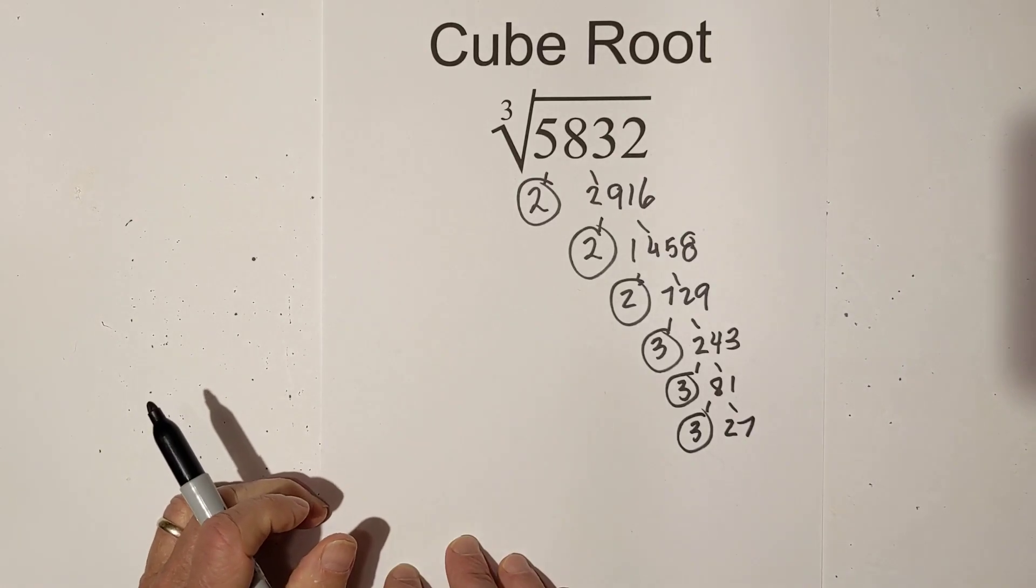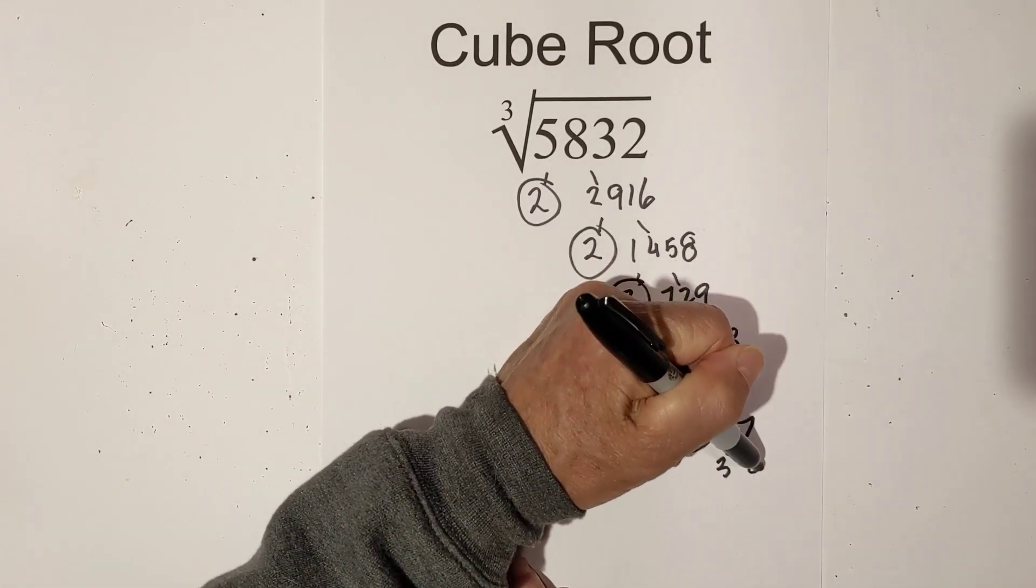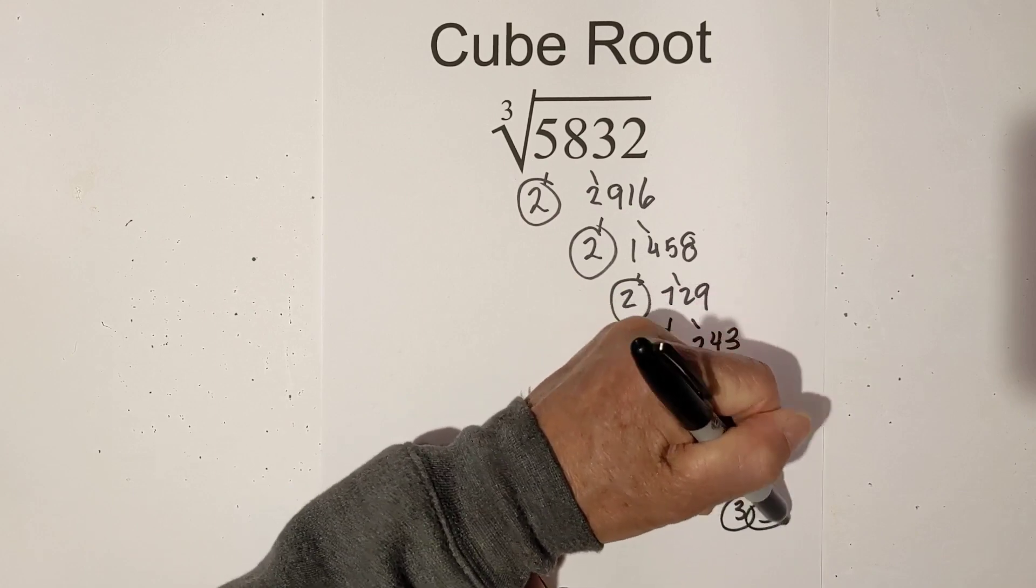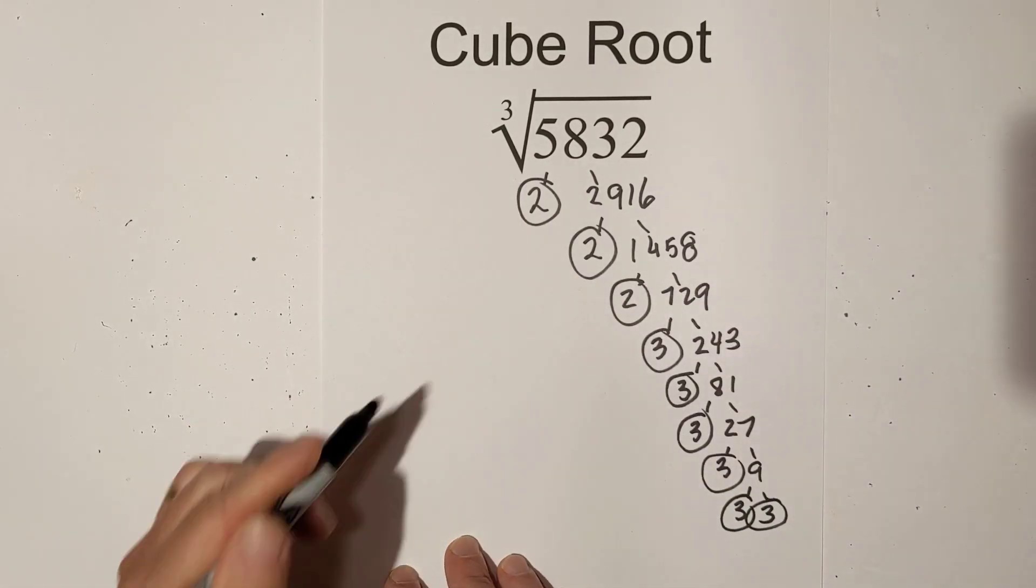We're still on the paper, then 3 times 9, and then 3 times 3. So now we have all of our prime numbers.